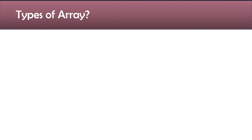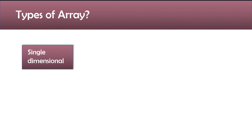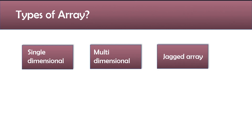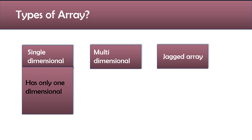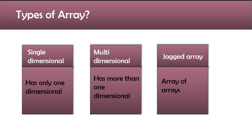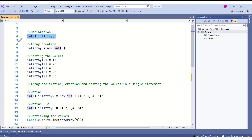We have different types of arrays. The simplest is the single-dimensional array, which is what we have been discussing. The next type is the multi-dimensional array, which has more than one dimension. Another type is the jagged array, which is an array of arrays — meaning each array element is itself an array. We will see how to work with each.